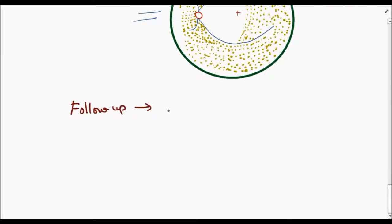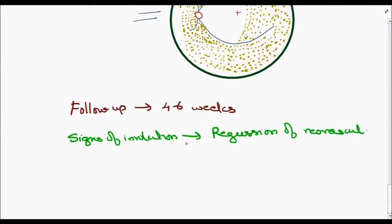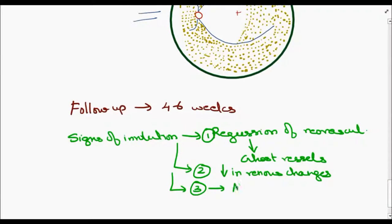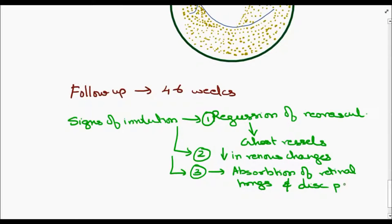Follow-up has to be done at 4 to 6 weeks. Signs of involution include regression of new vessels, presence of ghost vessels, decrease in venous changes, absorption of retinal hemorrhages, and presence of disc pallor.